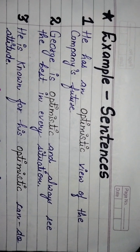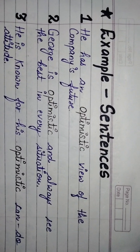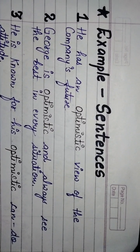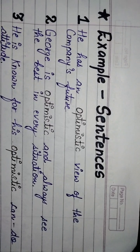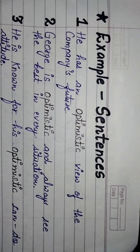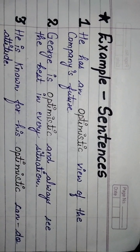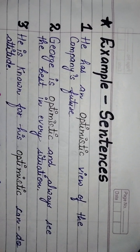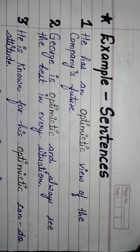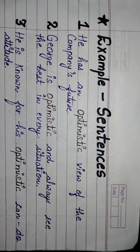Third sentence: 'He is known for his optimistic can-do attitude.' यानि कि वो अपने optimistic can-do attitude के लिए जाना जाता है — he is famous for his optimistic attitude. वो हर situation में positive रहता है, negative नहीं होता. कोई भी problem आती है, उसमें भी वो एक opportunity ढूंढता है — always being positive towards life. तो optimistic attitude की यह definition होती है.